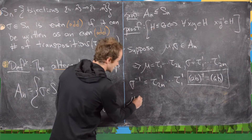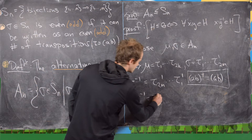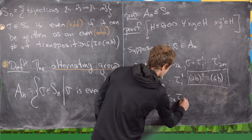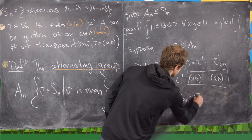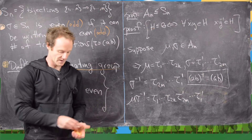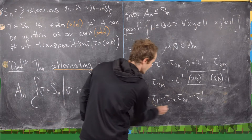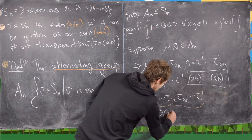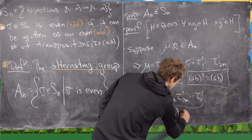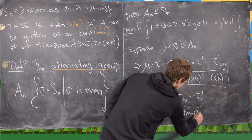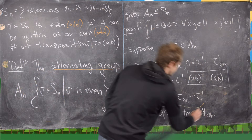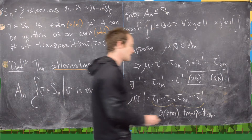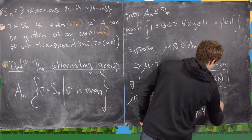Now mu·sigma⁻¹ equals tau_1 up to tau_2k followed by tau'_2m down to tau'_1. Notice this is exactly a product of 2(k+m) transpositions, which is obviously an even number, making mu·sigma⁻¹ an element of An. That finishes the proof that An is a subgroup of Sn.